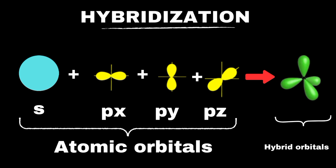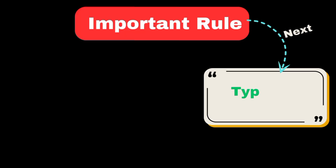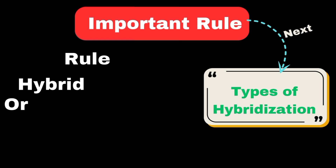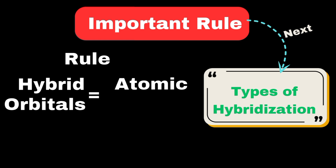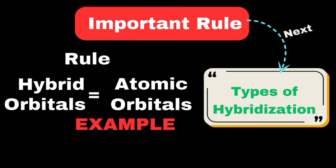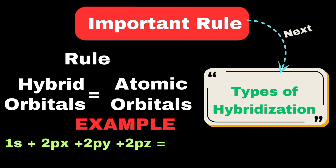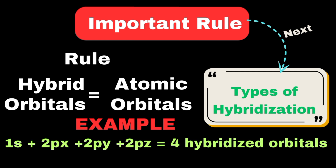We need to understand the important rule of hybridization, and after that we will move towards the types of hybridization. Always remember that the number of hybrid orbitals obtained is always equal to the number of atomic orbitals intermixed. For example, if 1s and 3p atomic orbitals are involved in mixing, then the number of hybrid orbitals obtained will be four, because four atomic orbitals are involved in mixing.